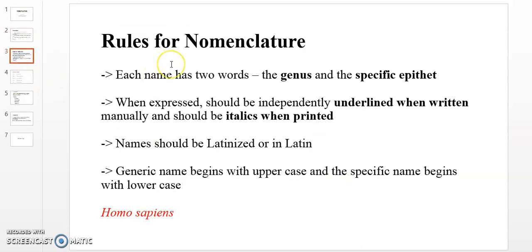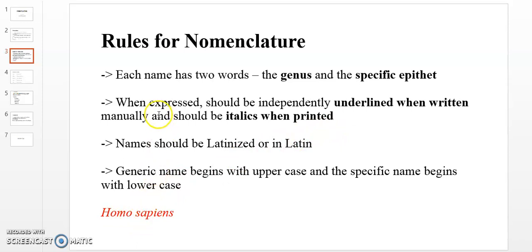Now we look at the rules of nomenclature. Each scientific name has two words — the genus and the specific epithet. When written by hand, each word should be independently underlined. When printed, the name should be in italics.